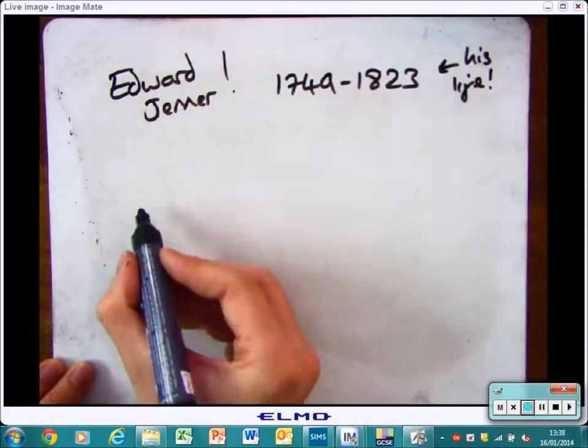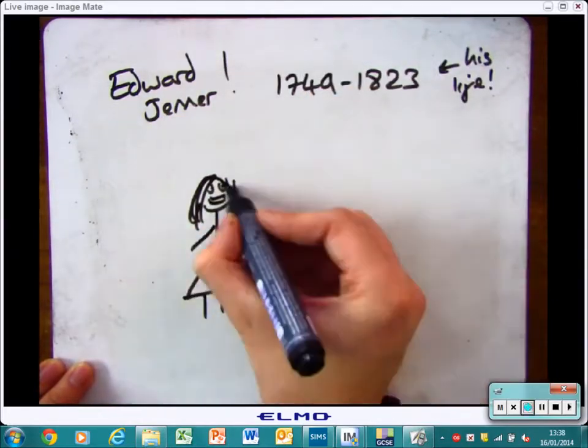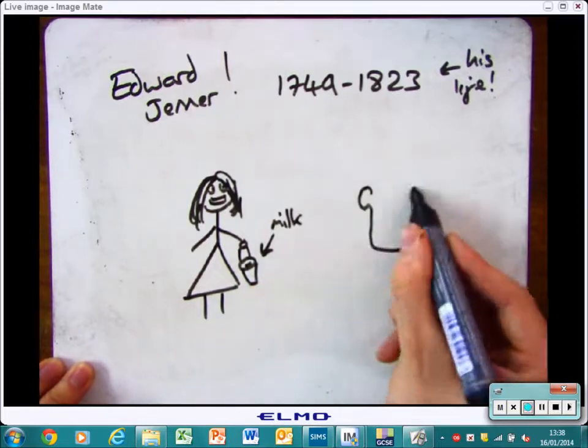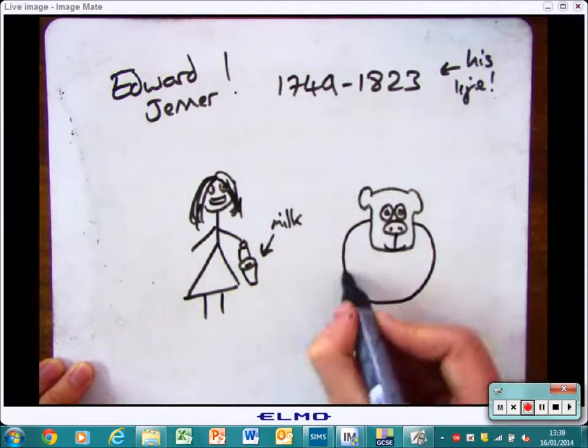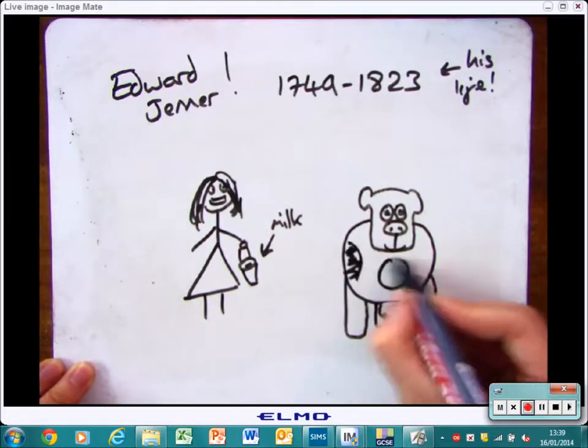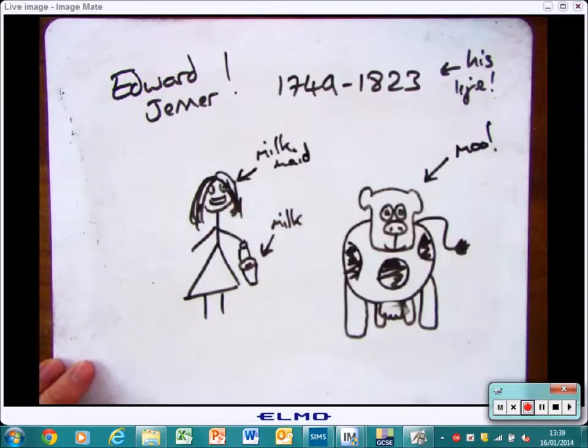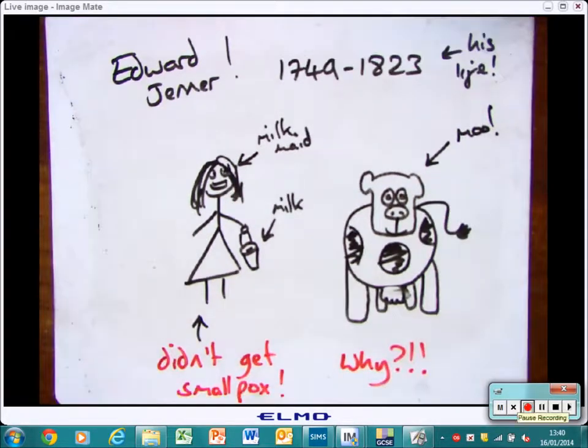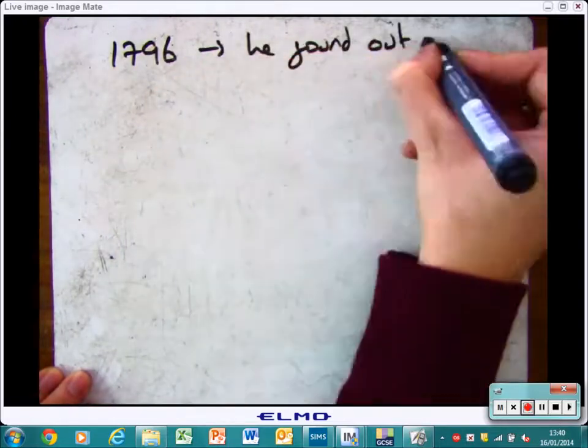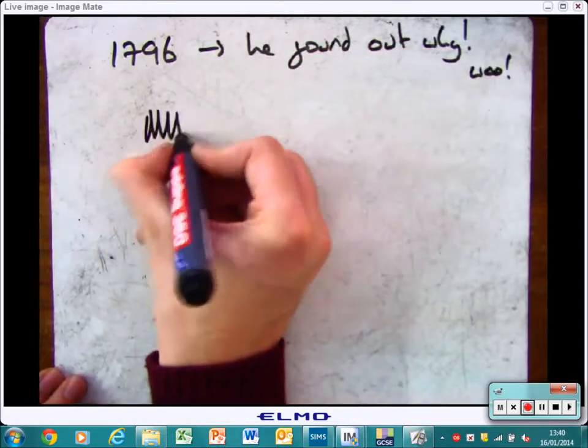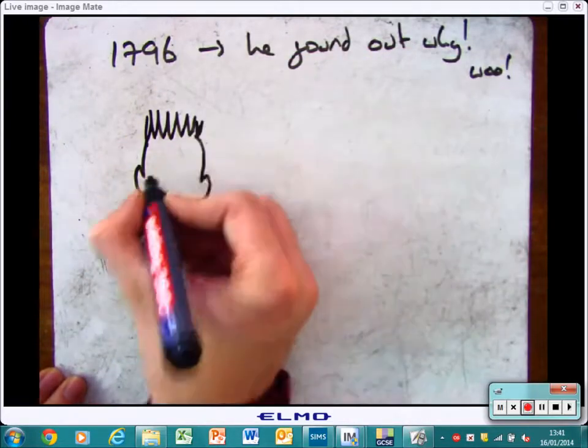Edward Jenner was the person that discovered what vaccines were. He was born in 1749 and died in 1823. His main discovery was the fact that milkmaids didn't get smallpox, and he wanted to know why.